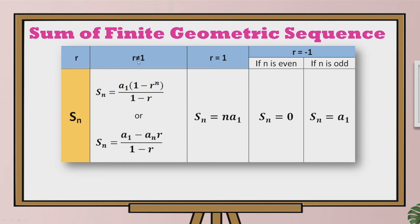If our common ratio is not equal to 1 — meaning any number except negative 1 and 0 — we can use these two formulas. We use the first formula if the first term is known, the common ratio is known, and the number of terms is also given. The second formula will be used if the first term is given, the last term of the geometric sequence is given, and the common ratio is known. Not knowing n will not matter in this formula.